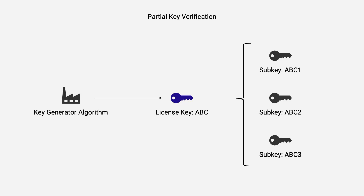A license key generator is a solution that is able to generate license keys. A simple way to generate license keys is through a method called partial key verification. With partial key verification, you generate a subset of license keys and set up an algorithm that checks only a part of that license key and some of the information stored within. This method is a lightweight solution that still prevents unauthorized users from accessing the application.